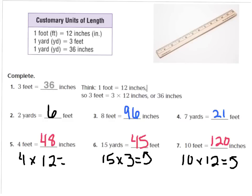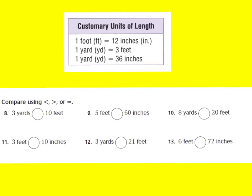Let's look at these practice problems — compare using less than, greater than, or equal to. We're going to compare 3 yards to 10 feet. I know that 1 yard equals 3 feet, so 3 yards times 3 gives me 9 feet. Since 9 is less than 10, 3 yards is less than 10 feet.